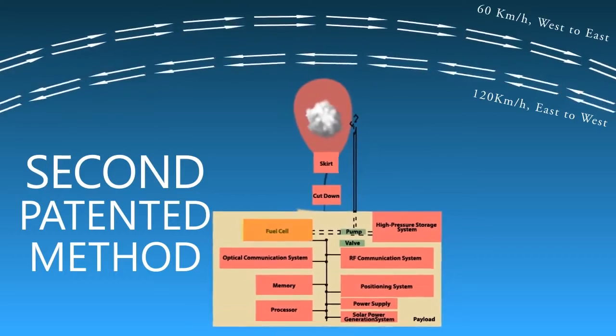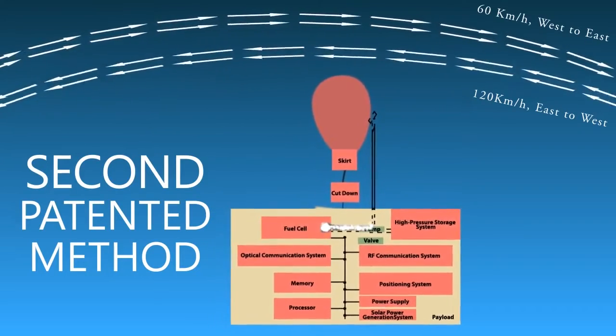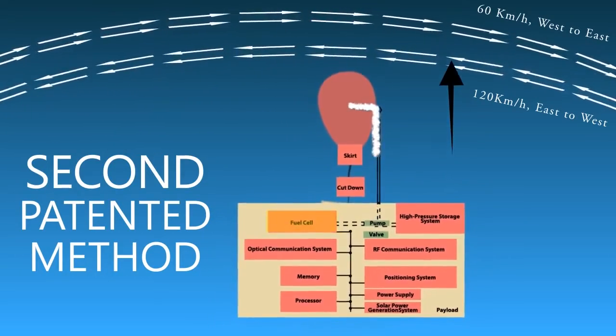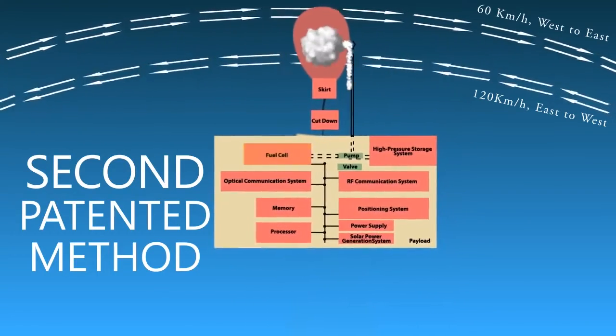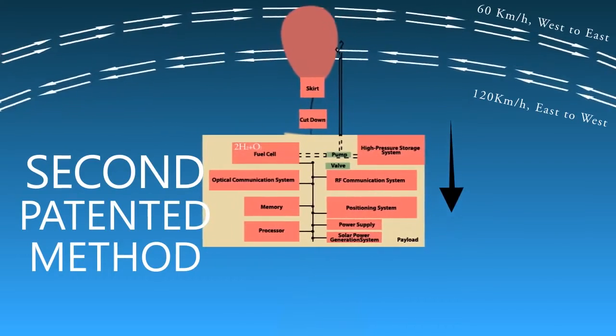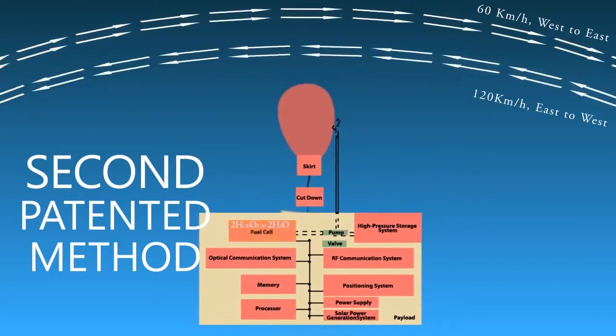Balloon runs a fuel cell, in reverse, to generate hydrogen gas, which is moved into the envelope to increase buoyancy and altitude. The hydrogen is pumped back to produce power via the chemical reaction of hydrogen and oxygen to produce water.